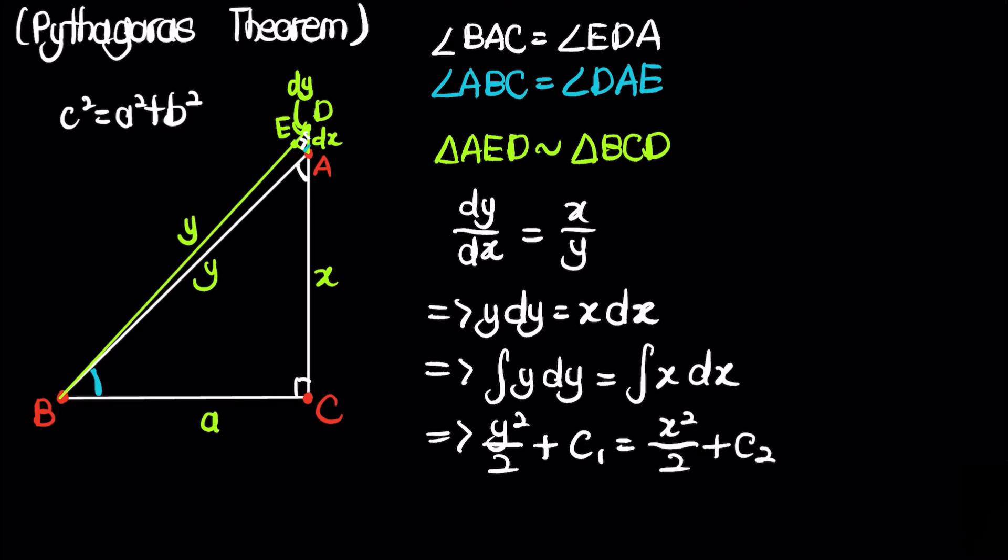And then from here, you can actually rewrite the whole thing, which I'll let you guys find out that in the end, you can actually get y squared is equal to x squared plus c, where c is just a constant.